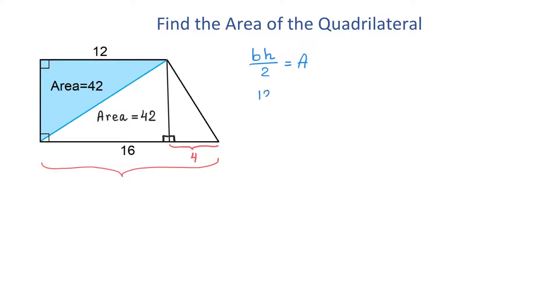So then, 12 times h over 2 equals 42. 12 divided by 2 is 6, then 6h equals 42, and if we divide both sides by 6, we will get that the height is 7.